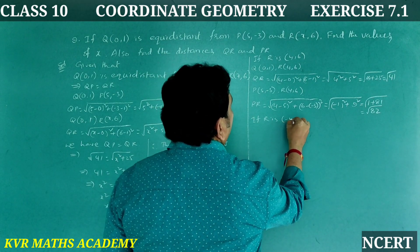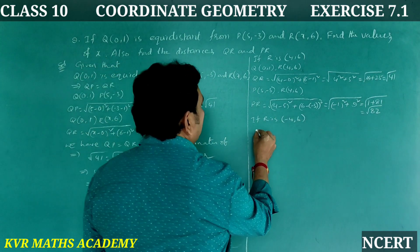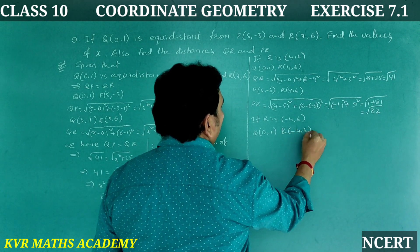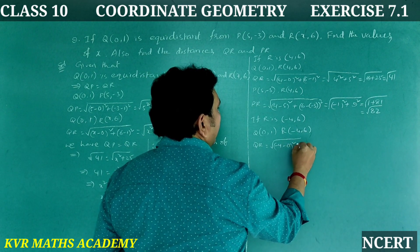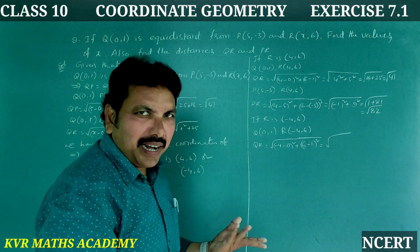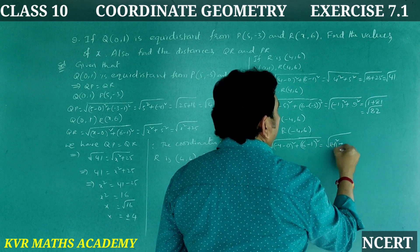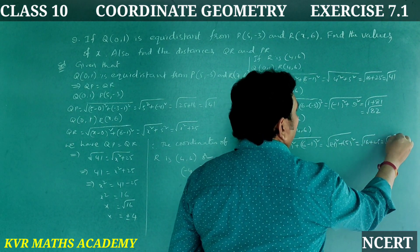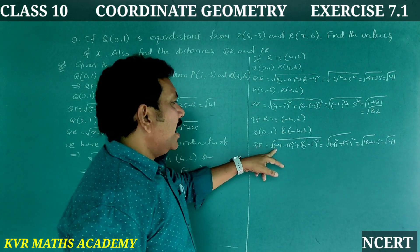Next, if R is (−4, 6): Q is (0,1) and R is (−4,6). QR = √[(−4−0)² + (6−1)²] = √[(−4)² + 5²] = √[16 + 25] = √41. So whether x is +4 or −4, QR equals √41.